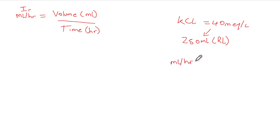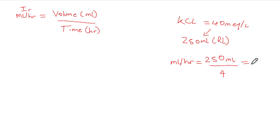Your mils per hour — your infusion rate — equals the volume, which is 250 mils, divided by the time, which is four hours. So 250 divided by 4 gives us 62.5. If using an infusion pump, you run it at 62.5 mils per hour. The pump will automatically confirm the time and infusion rate, and you can adjust accordingly.